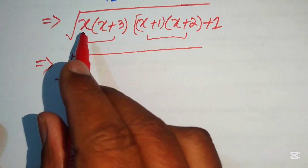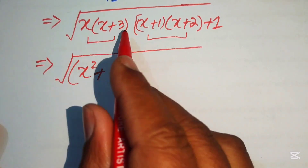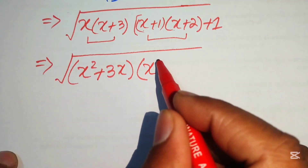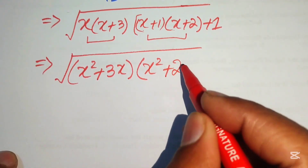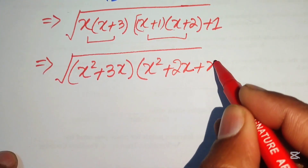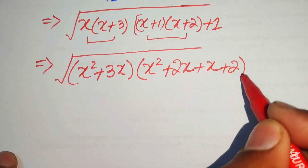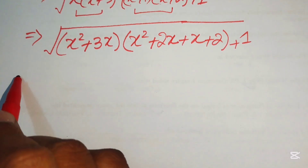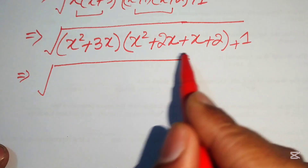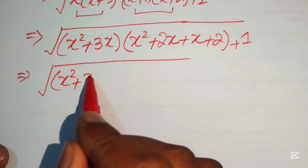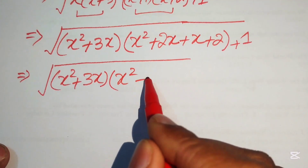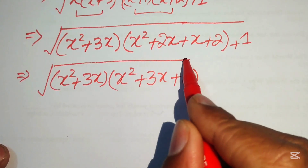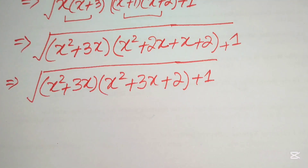Now we multiply these two pairs. x times x equals x², and x times 3 equals 3x, giving x²+3x. For the other pair: x times x equals x², x times 2 equals 2x, 1 times x equals x, and 1 times 2 equals 2, giving x²+3x+2. So we rewrite the expression as the square root of (x²+3x)(x²+3x+2) plus 1.